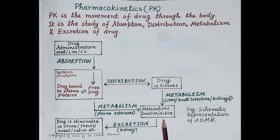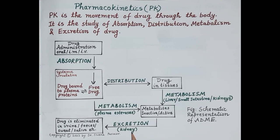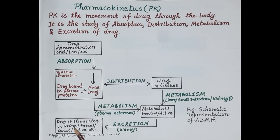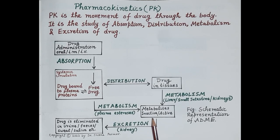Drugs are metabolized and in the majority of cases are converted to inactive, water-soluble metabolites which can be easily excreted, primarily by the kidneys in the urine. Drugs are removed either as inactive metabolites, or the drug is directly excreted unchanged, or the drug is partly excreted as a metabolite and partly as the unchanged drug.